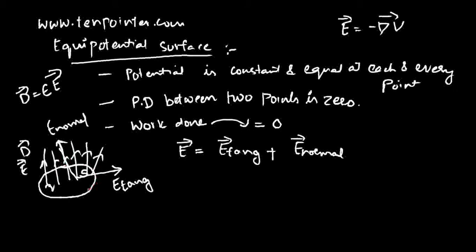Now we are going to consider a surface on which the potential is constant at each and every point — that is an equipotential surface. When the potential is constant on the surface, the electric field on the surface would be the tangential component of the electric field. The tangential component is present on the surface and the normal component is perpendicular to the surface. So potential being constant results in the tangential electric field component being equal to zero on the surface.